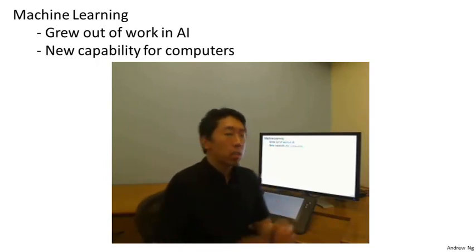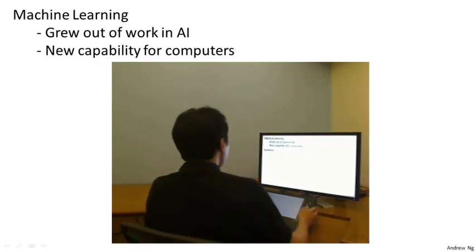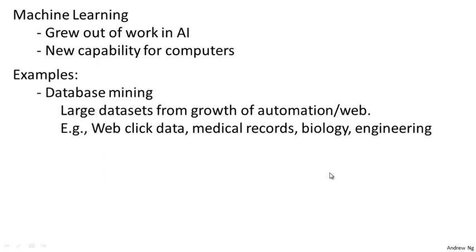Here are some modern examples of machine learning. There's database mining. One of the reasons machine learning is so prevalent is the growth of the web and the growth of automation — all of this means we have much larger data sets than ever before. Tons of Silicon Valley companies are today collecting web click data, also called click stream data, and are trying to use machine learning algorithms to mine this data to understand and serve users better.